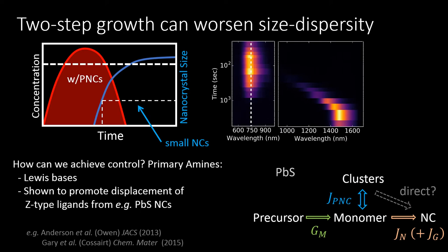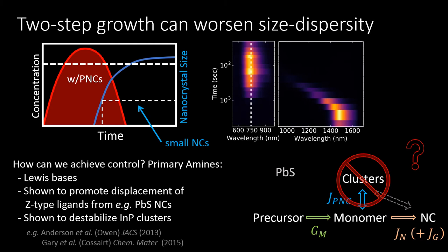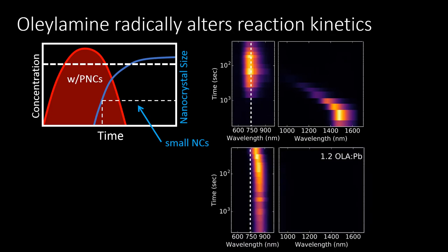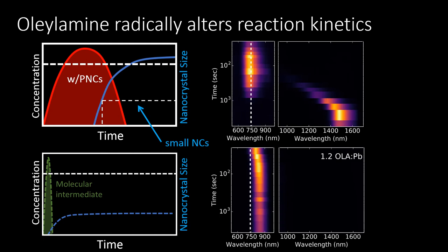Lewis bases such as amines have been shown to promote Z-type ligand displacements on the surface of nanocrystals. And the group of Banding-Cossart has shown that adding amines to the synthesis of indium phosphate nanocrystals suppresses the indium phosphate cluster in a similar mechanism to Z-type ligand displacement. Thus, we added amines in the hope of bypassing the pre-nucleation cluster and regaining control over the kinetics. The addition of amines such as oleylamine immediately changed the reaction. Instead of a slowly rising pre-nucleation cluster feature, we observe direct nucleation and growth of small PbS nanocrystals, consistent with a fast burst nucleation through a strong Jn leading to small nanocrystals at reaction completion.